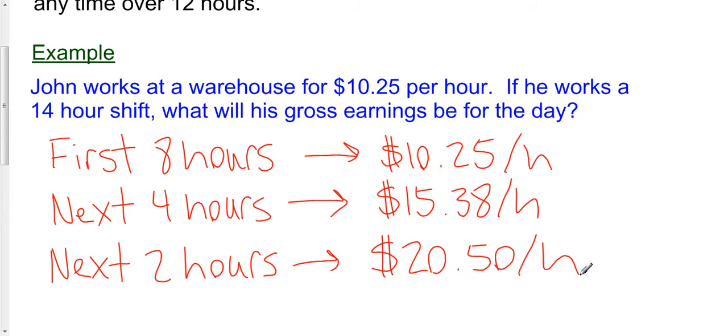Now to calculate what John actually made on his 14-hour shift, we have to make three separate calculations, because there are three different hourly wages here. And then we're going to add it all up in the end.